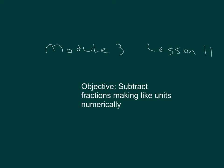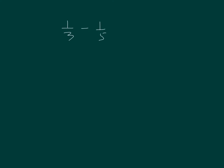The objective within this lesson is to subtract fractions making like units numerically. I have one-third minus one-fifth. I have thirds and I have fifths. Let's make fifteenths.